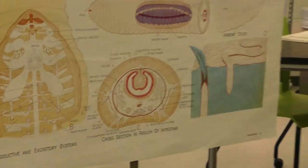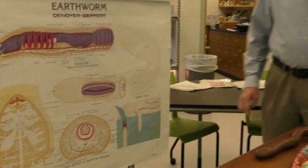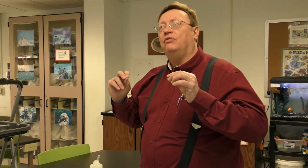By contracting either circular muscles that run around the worm or longitudinal muscles that run the length of the worm, the worm can compress a given segment of the worm.